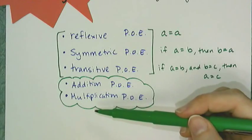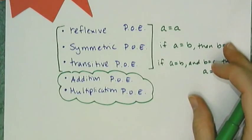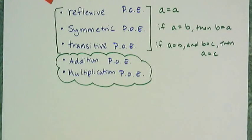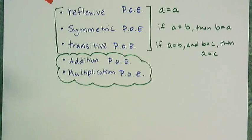And what the multiplication property of equality says, it says that I can multiply both sides of an equation by something, and it'll stay equal, as long as it's not zero. Don't multiply both sides of an equation by zero, because that gives you nothing but zero.